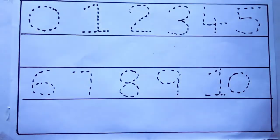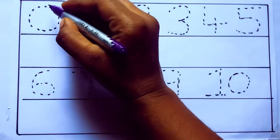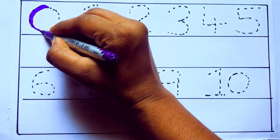Let's draw numbers. Violet color 0, Z-E-R-O.